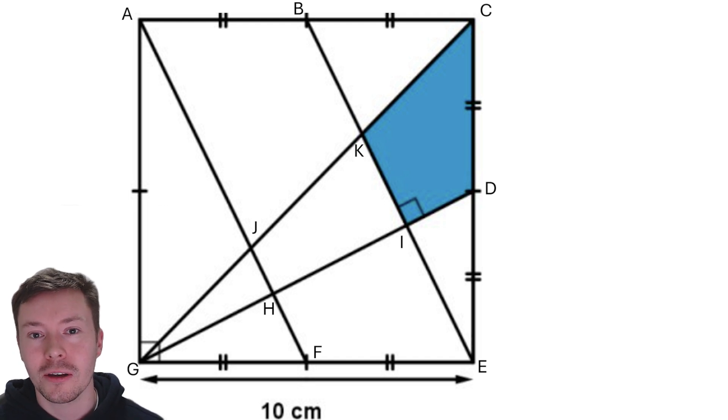Now this problem is how to find the blue area. We've got a square with side length 10cm and several line segments cutting across that square making the blue area. The first thing I'm going to do, as you've seen in front of you, is label the sides and the key points of that square.